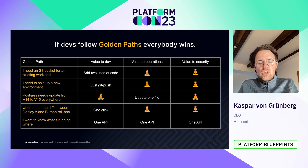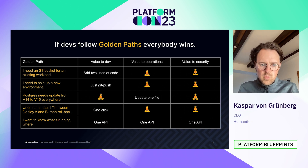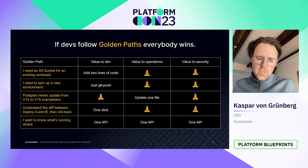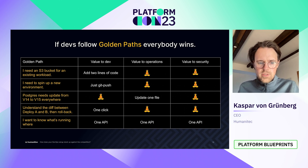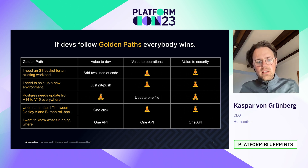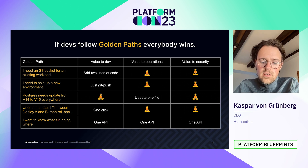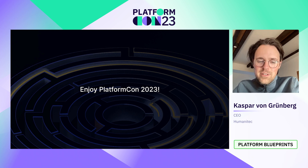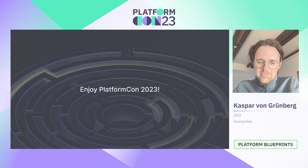Golden paths are good for everybody because they make things so much easier. Adding an S3 bucket is exactly two lines of code with nobody else involved. Spinning up an environment is one git push. Updating Postgres from version 14 to 15 is one file. Understanding the immutable difference between states between deployments — because we're regenerating everything — is a single diff command. Knowing what's running where is one API call. That is the power of dynamic configuration management and designing golden paths in a decentralized way along the entire software development life cycle. I hope this was helpful — enjoy PlatformCon 2023 and see you soon in the community.